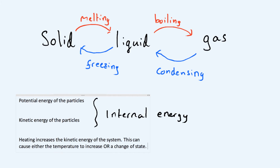So either the temperature goes up or there's a change of state. As you keep heating and the substance is melting, the temperature doesn't go up while it's melting. Then once there's a liquid, you carry on heating and the temperature goes up again. The change of state is going to be either melting or boiling.